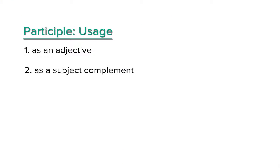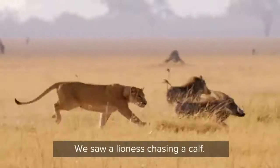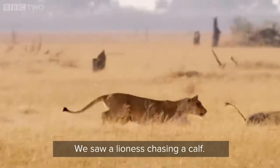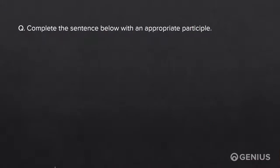A participle is used as an object complement also. For example, we saw a lioness chasing a calf. Let's solve a question now.